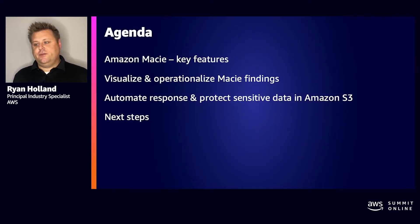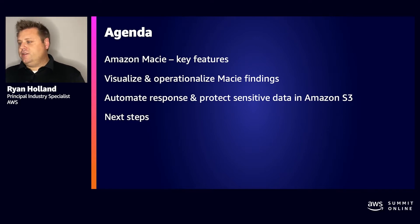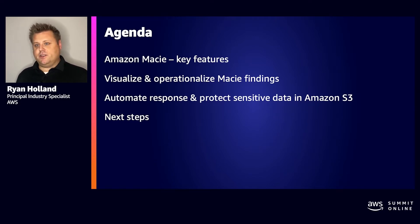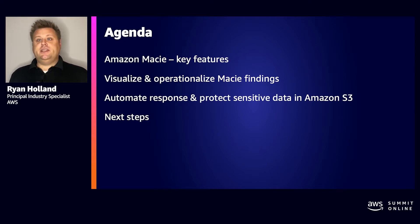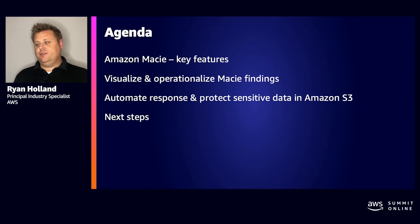In this session, we're going to cover four different topics. First, we'll do a brief overview of some of the key features and functionality in Amazon Macie for those who might be new to the service. We'll also touch on ways that customers can visualize and operationalize the findings that Amazon Macie makes, and share best practices we've found working with customers over the last year since we relaunched Macie — including ways to automate response to the detection of sensitive data or changes in bucket security settings.